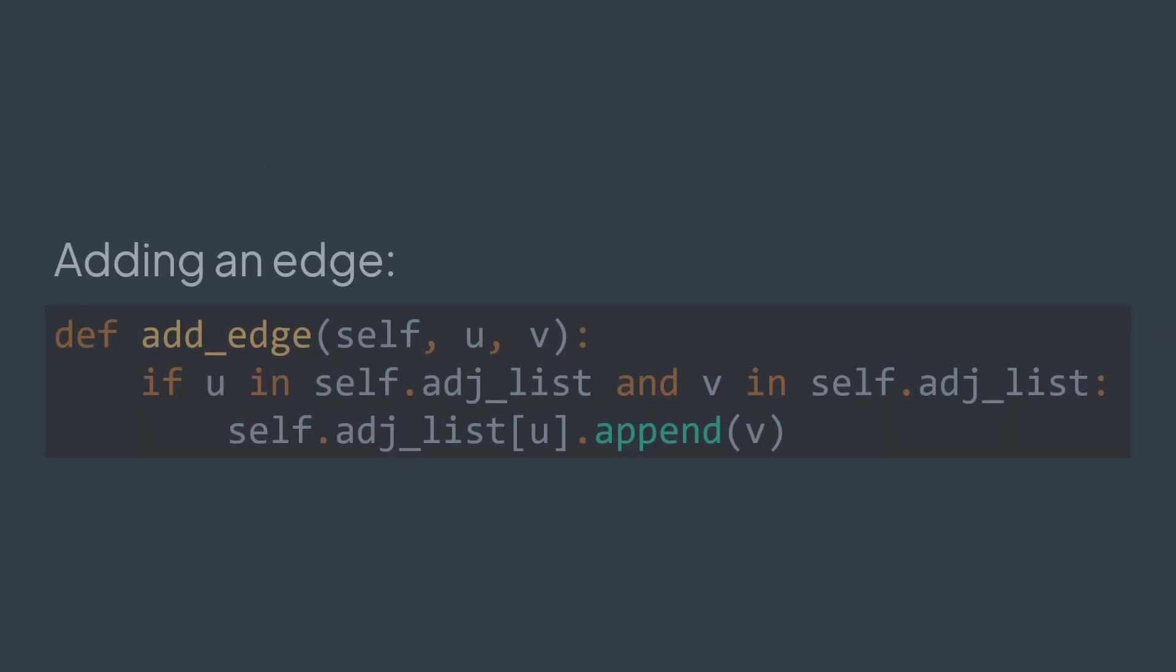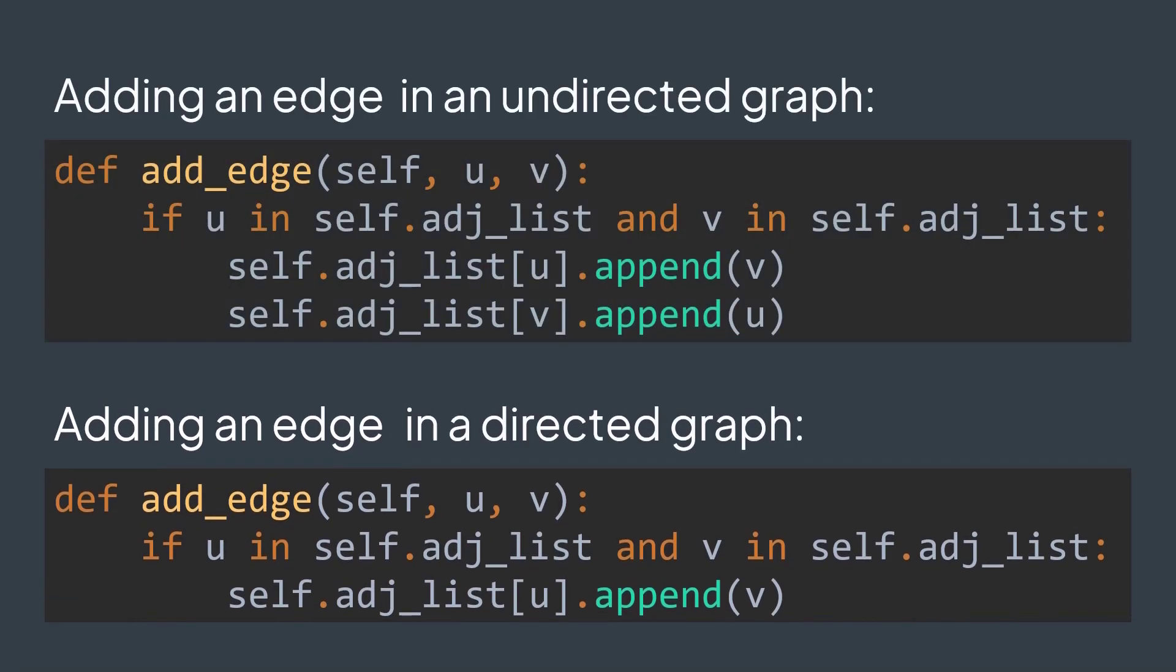Next operation: adding an edge. We want to add an edge from u to v. For that, after checking that both u and v exist, we just need to add v to neighbors of u. We write adj_list[u].append(v). That's it. But if the graph is undirected, as said earlier, we should also add u to neighbors of v. We also write adj_list[v].append(u).